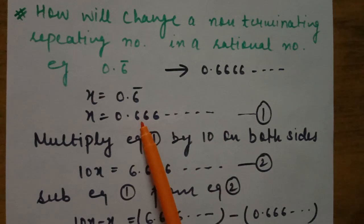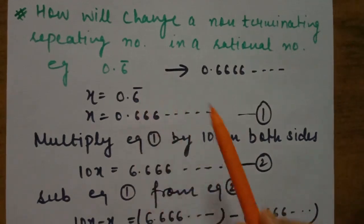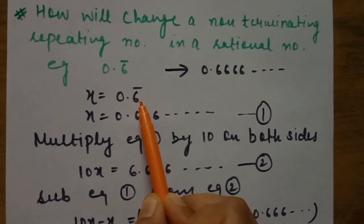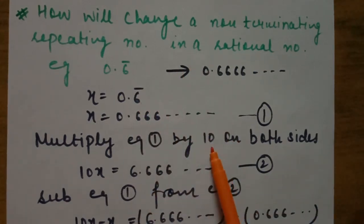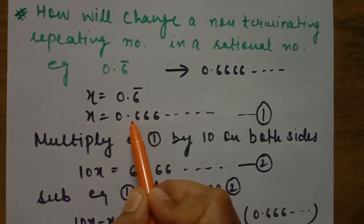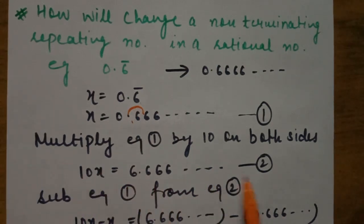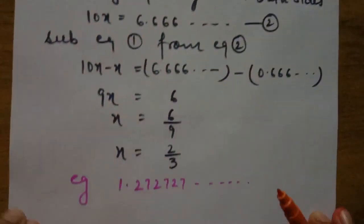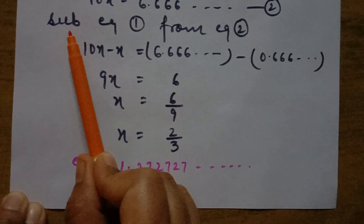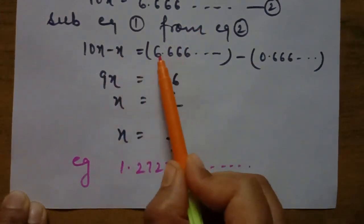Count how many digits are under the bar — only one digit. So multiply by 10 on both sides. If two digits are under the bar, multiply by 100; if three digits, multiply by 1000. Here, multiplying by 10 shifts the decimal one place right: 10x = 6.666... This is equation number two.